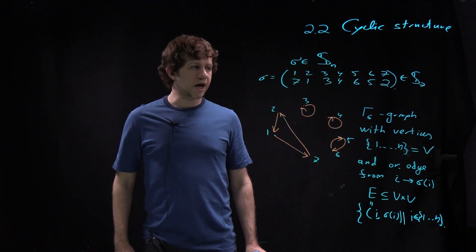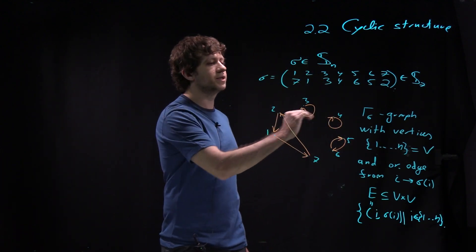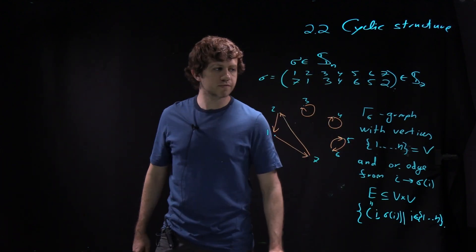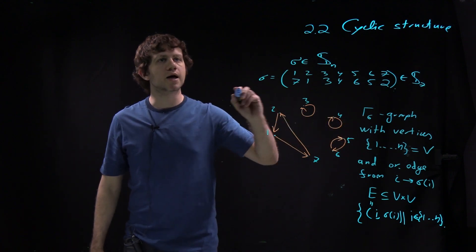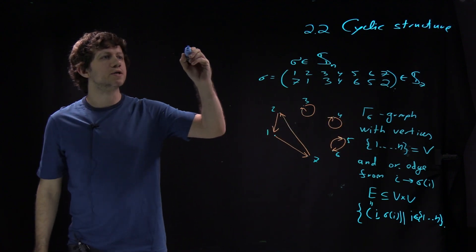To remind you: in an oriented graph, an edge is some subset of V cross V, and we take this subset to be the set of pairs (i, sigma(i)) for i in the set from 1 to n. So we've defined a certain graph.